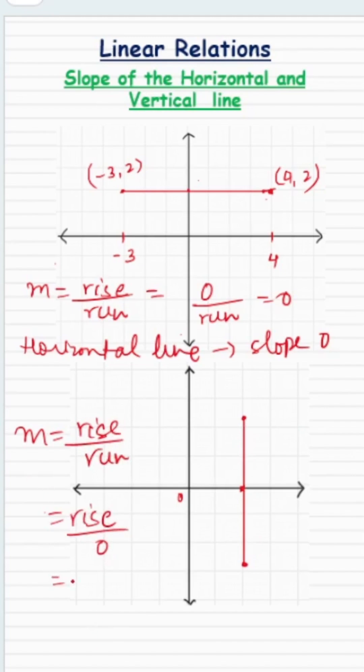Now any fraction with the denominator 0 is not defined. So the vertical line always has the slope of not defined, or you can say that they have undefined slope.